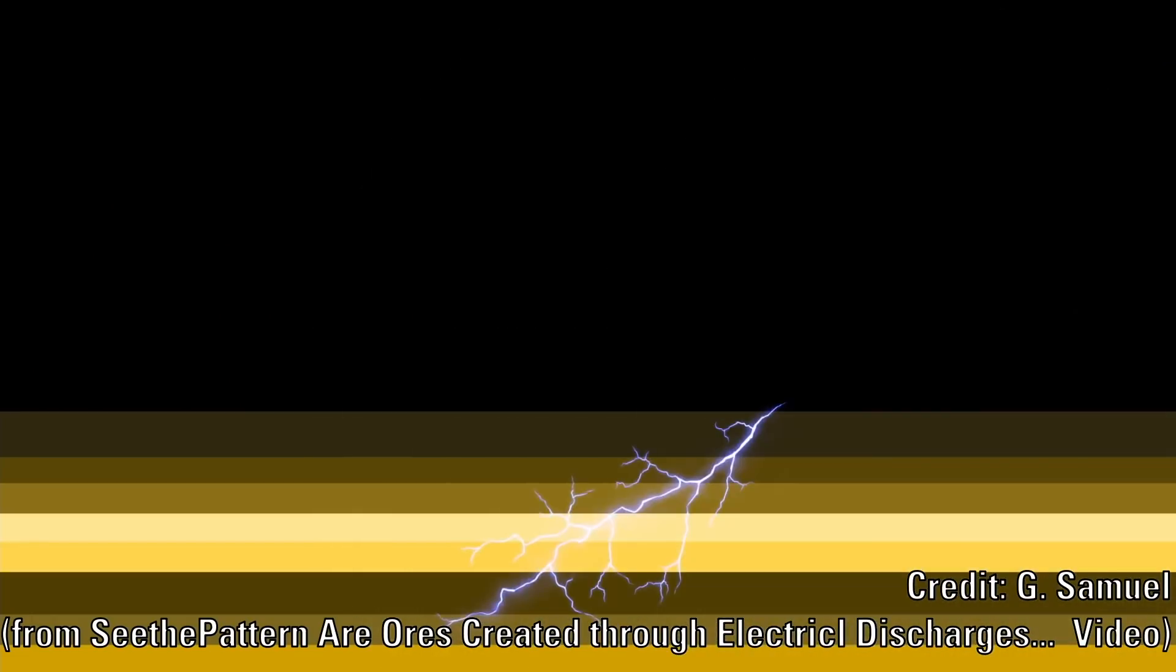This would occur in intense electrical discharges. Related to this, electrical discharges are the prime suspect for the occurrence of transmutation in Earth geology. One consequence of this is that the dating of geological layers becomes questionable, since the transmutation alters the decay rate of elements.